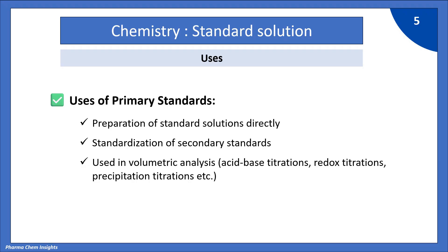In acid-base titration, KHP is used as a primary standard. In redox titration, Sodium Oxalate is used as a primary standard to standardize Potassium Permanganate (KMnO4). In precipitation titrations, NaCl is used as a primary standard.